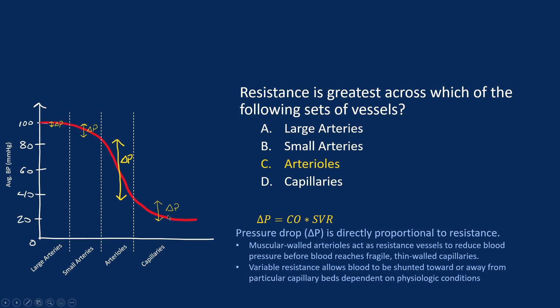This serves a function: the muscular-walled arterioles act as resistance vessels to reduce blood pressure before blood reaches the fragile thin-walled capillaries — you don't want high-pressure blood rupturing them. Arterioles can also vary their resistance to shunt blood toward or away from any particular capillary bed. For example, during exercise, arterioles in the gastrointestinal system increase resistance to shunt blood toward the muscles. The opposite is true when eating at rest. The body can shunt blood toward areas of physiologic need.